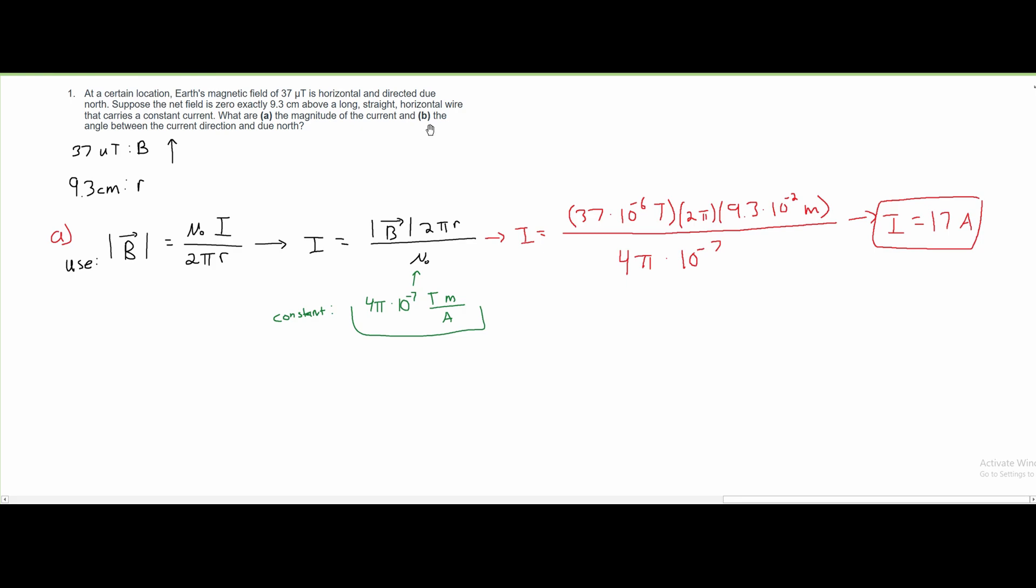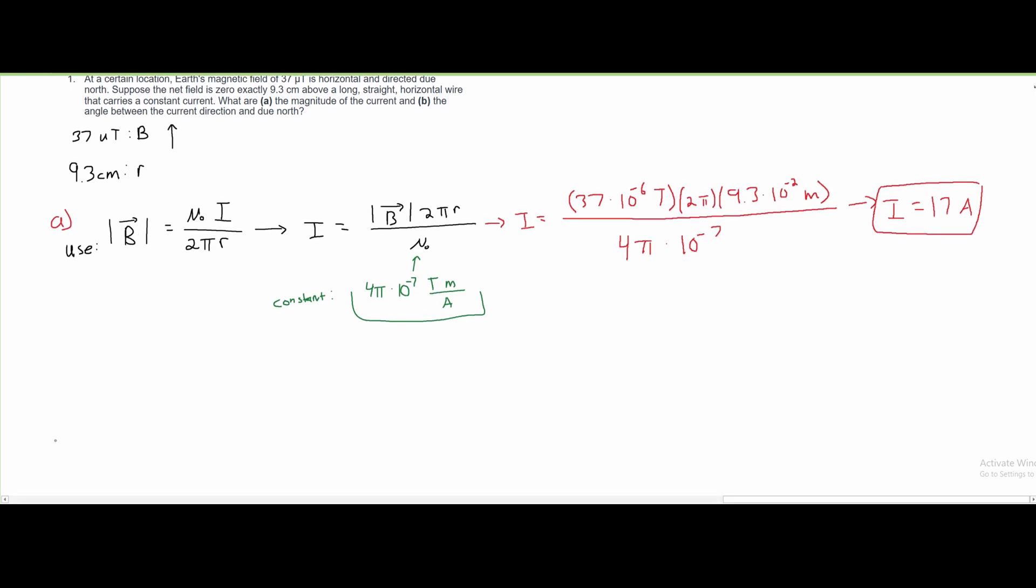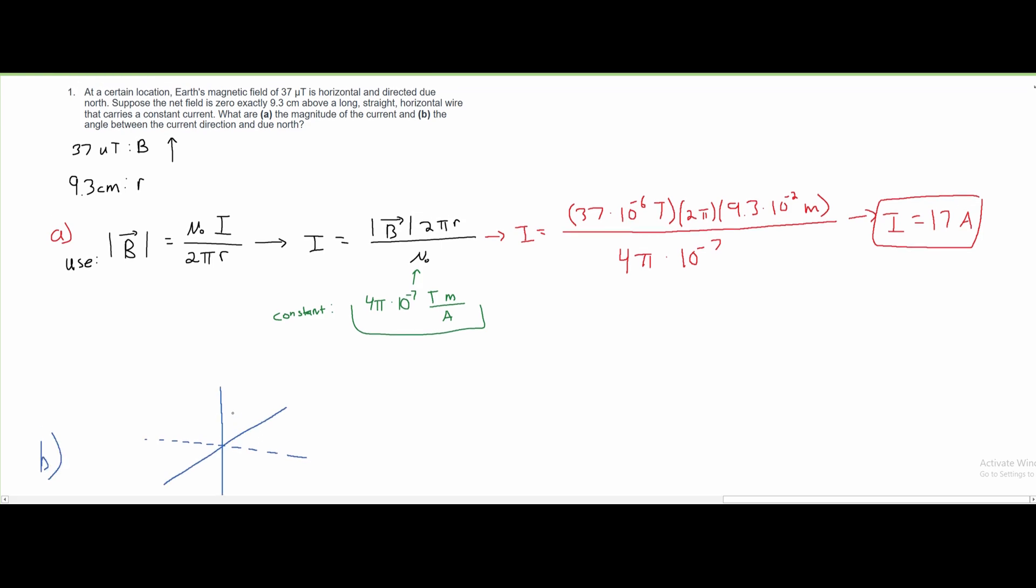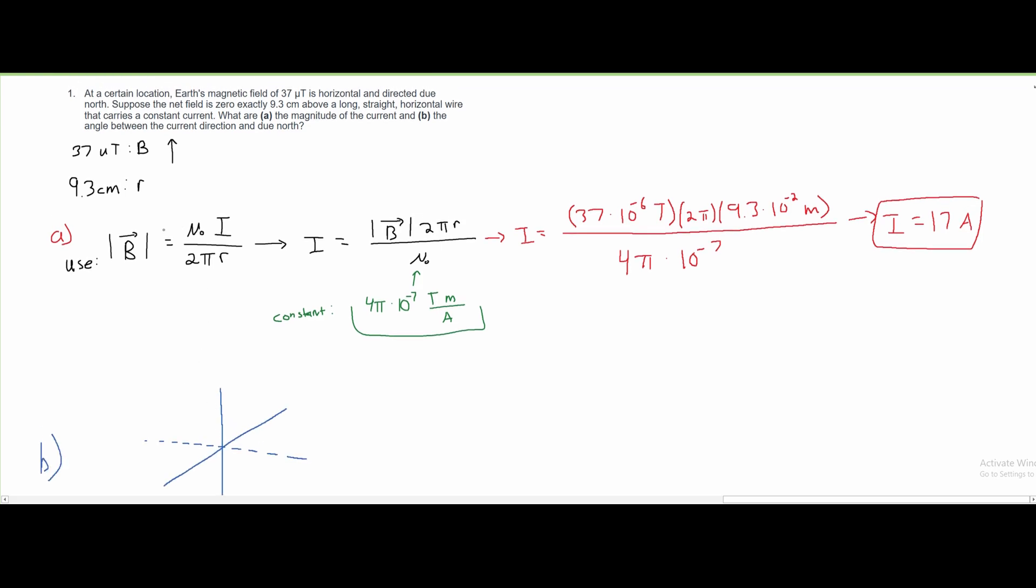In part B, we're asked to find the angle between the current direction and due north. If we draw a graph like this, we can start graphing what we're given.